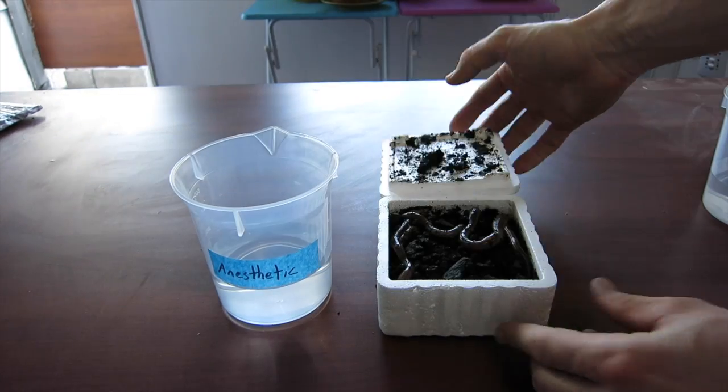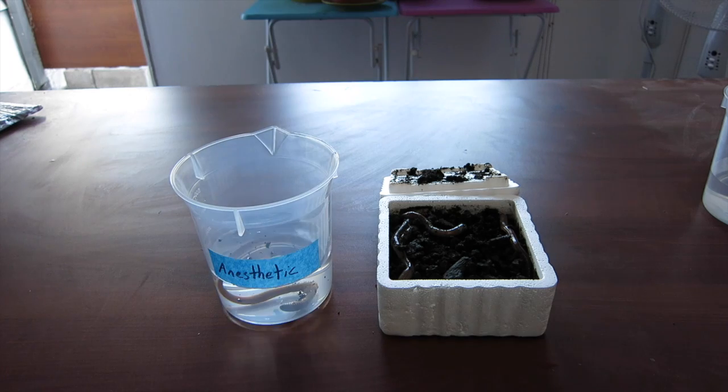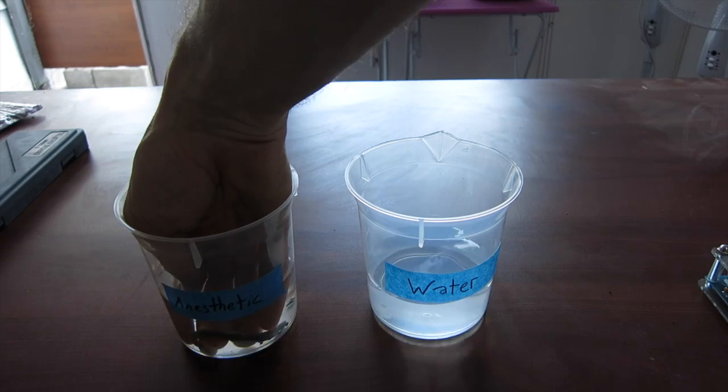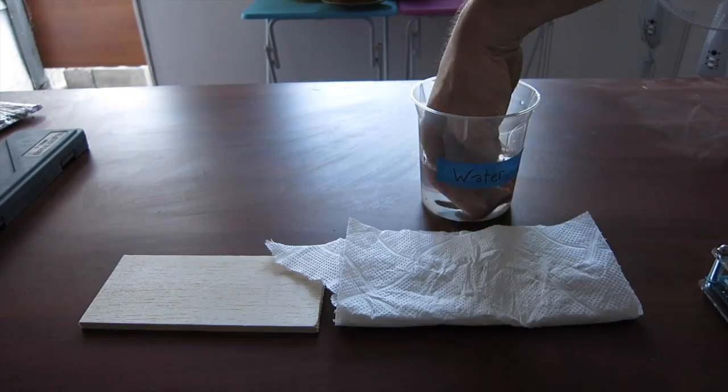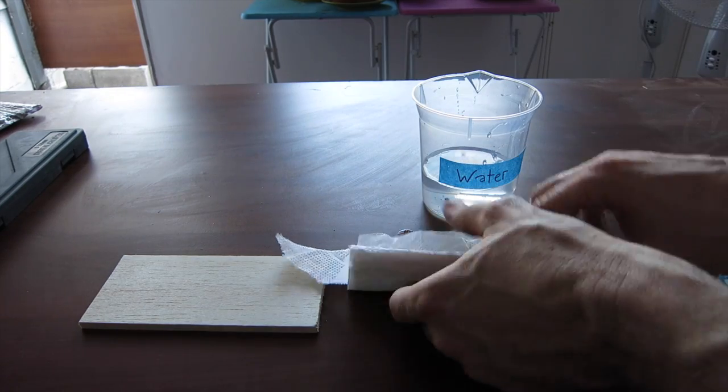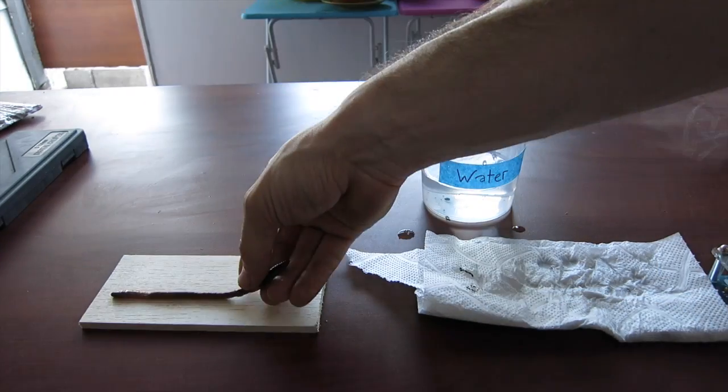Take a robust looking worm and place it in the anesthetic solution, and wait approximately 6 minutes. The worm should have stopped moving by now, meaning it is properly anesthetized. Rinse it off briefly in water, dry it, then place the worm on the balsa wood table to begin your measurements.